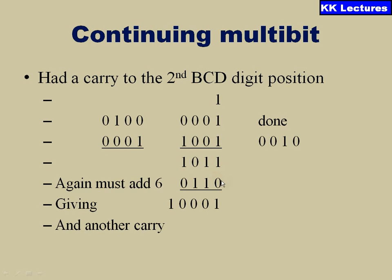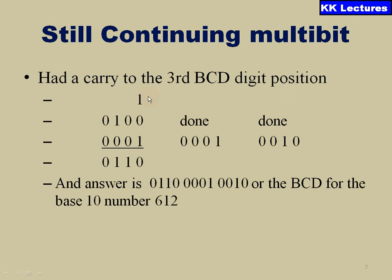So again I am adding 0110 such that I got the result as 1001, and this one I need to send to the carry for the third BCD digit position. So I am sending the carry to the third BCD position. 1 plus 1 is 0, 0 plus 0 is 1, 1 plus 0 is 1, and 0 plus 0 is 0.